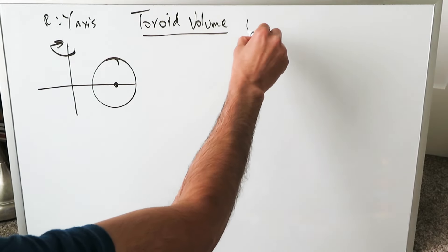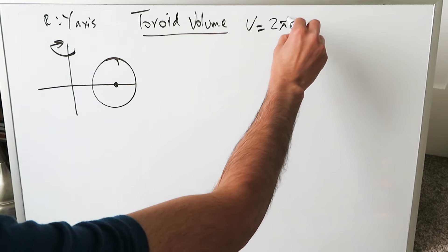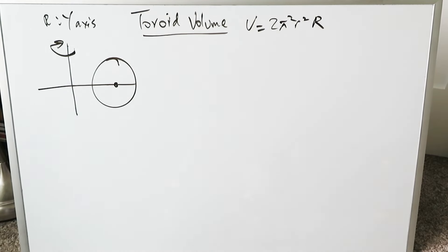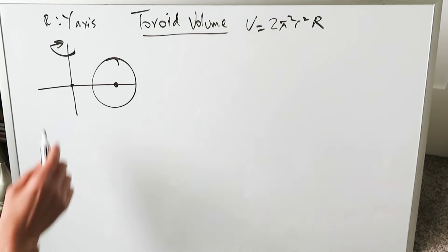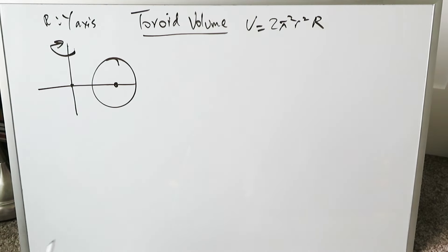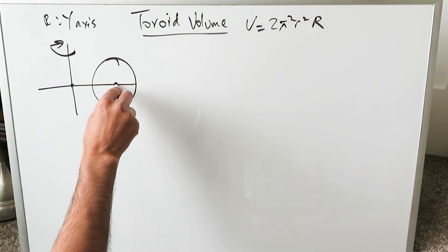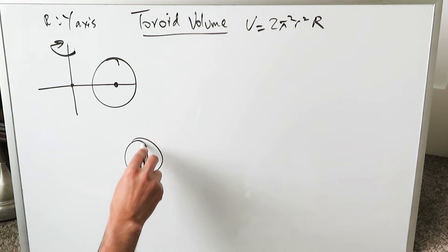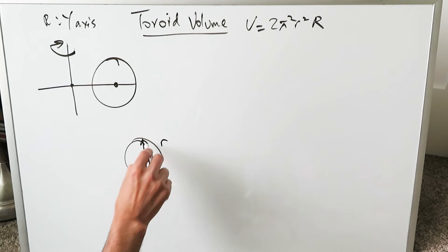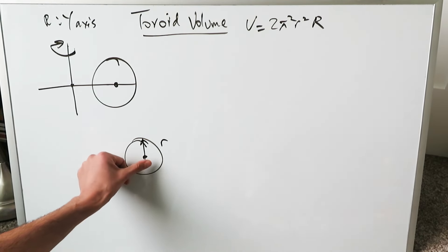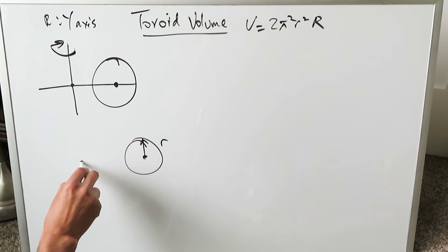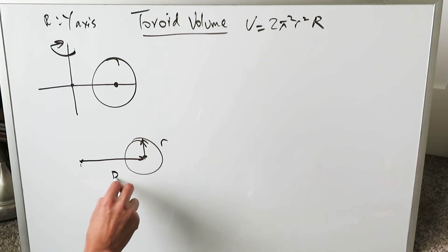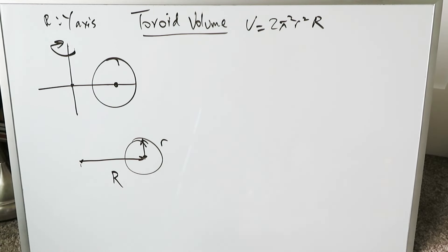Keep in mind the volume formula is 2π²R·r². Let's talk about those two r's. If you have a circle drawn a certain distance away from the origin, with the y-axis as the line of rotation, the circle has a certain inherent radius — we'll call that r. That's the inherent or minor radius of that circle. Looking from the line of rotation and the origin across, you have a major radius. Those are your two r's.